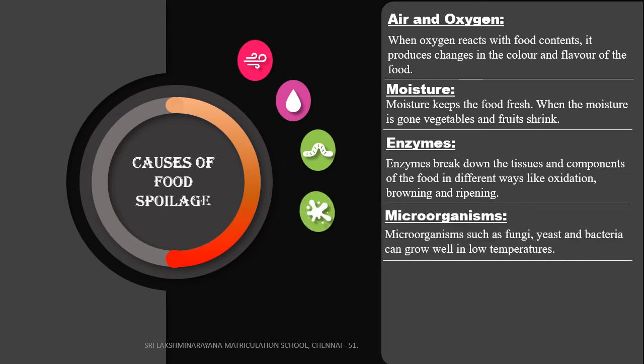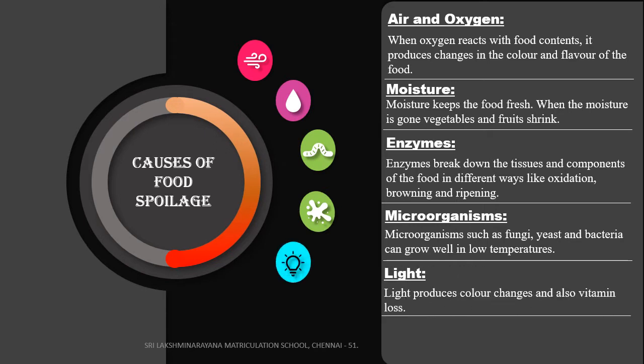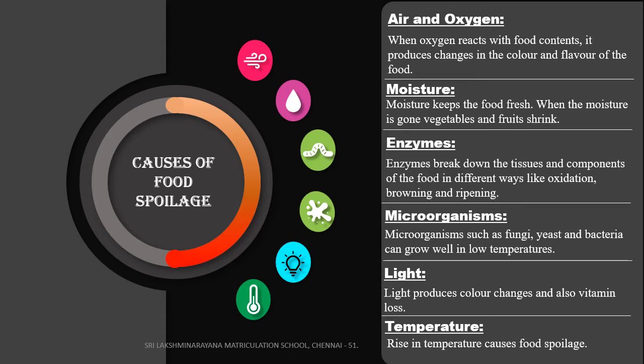Fourth, microorganisms — microorganisms such as fungus, yeast and bacteria can grow well and multiply in food, spoiling it. Next, light — light produces color changes and vitamin loss. Next, temperature — sometimes a rise in temperature causes food spoilage.